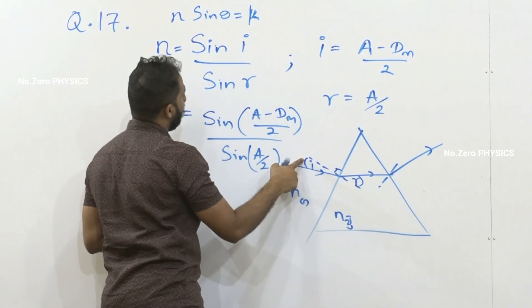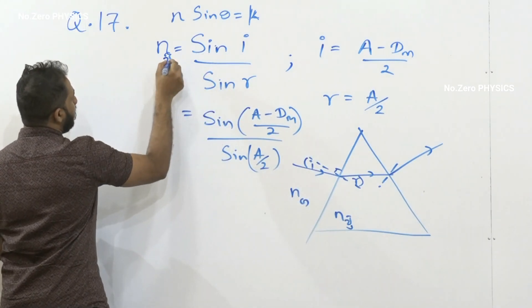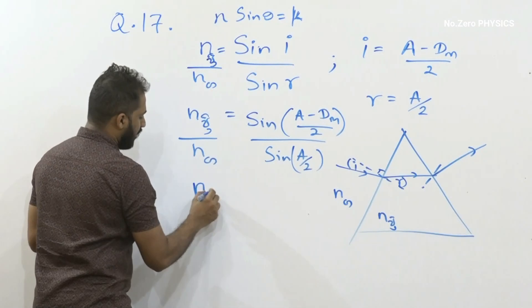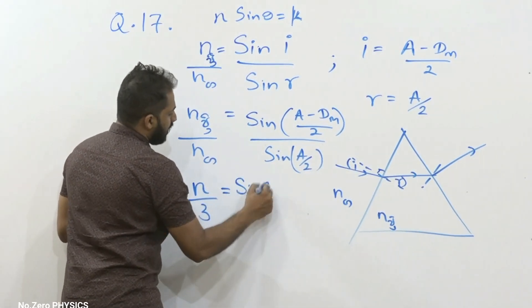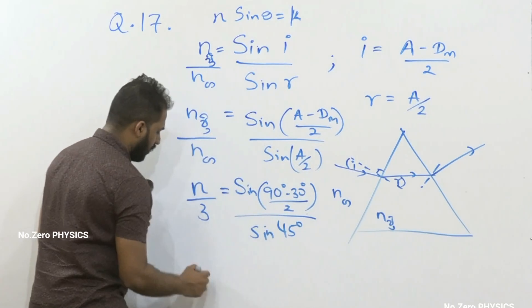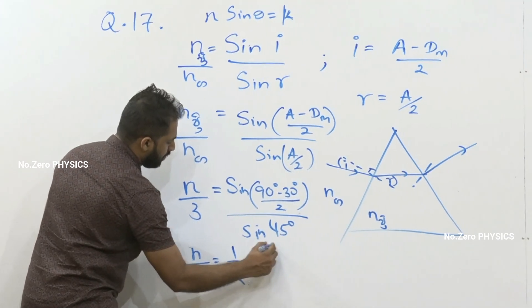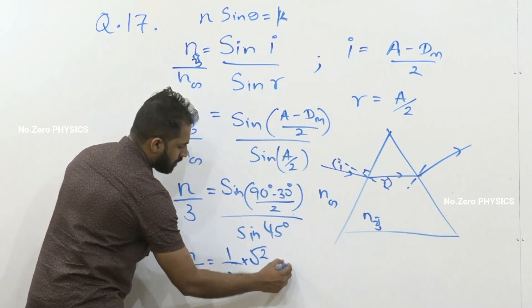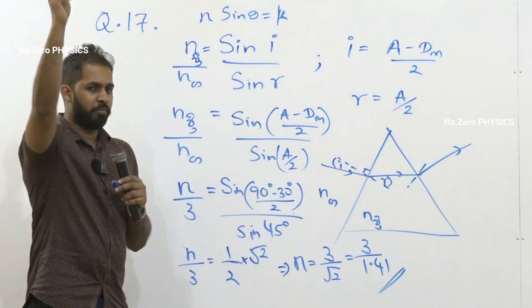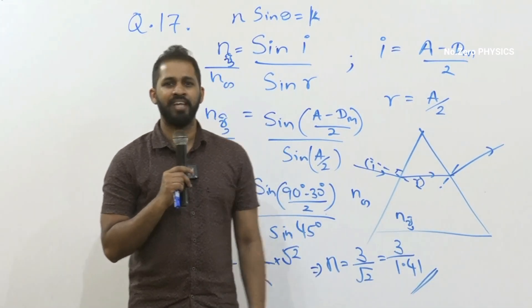[Content largely unintelligible - appears to contain mathematical/technical discussion with terms like 'sin', 'prism', but ASR quality is severely degraded]